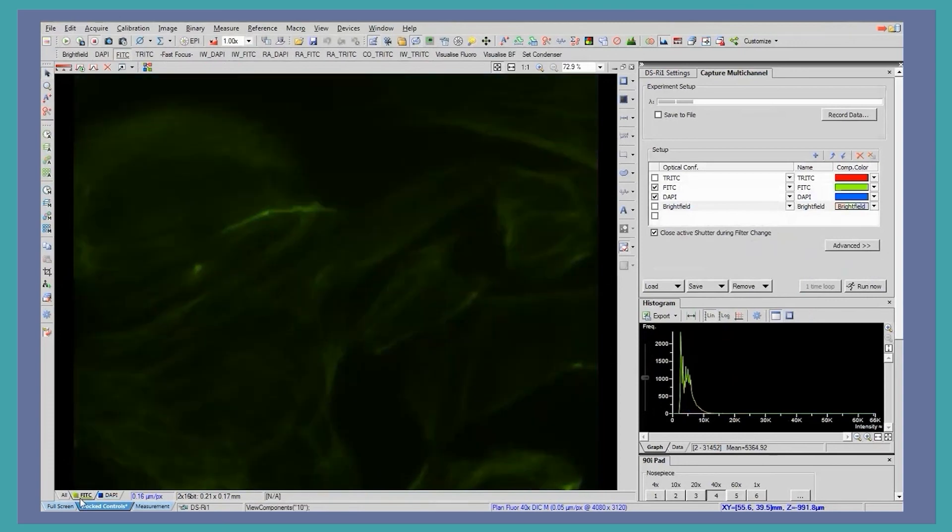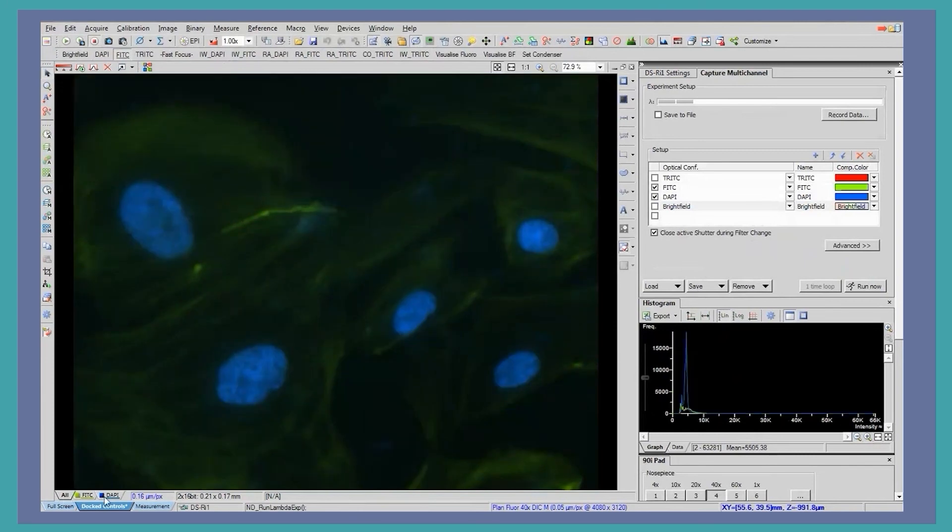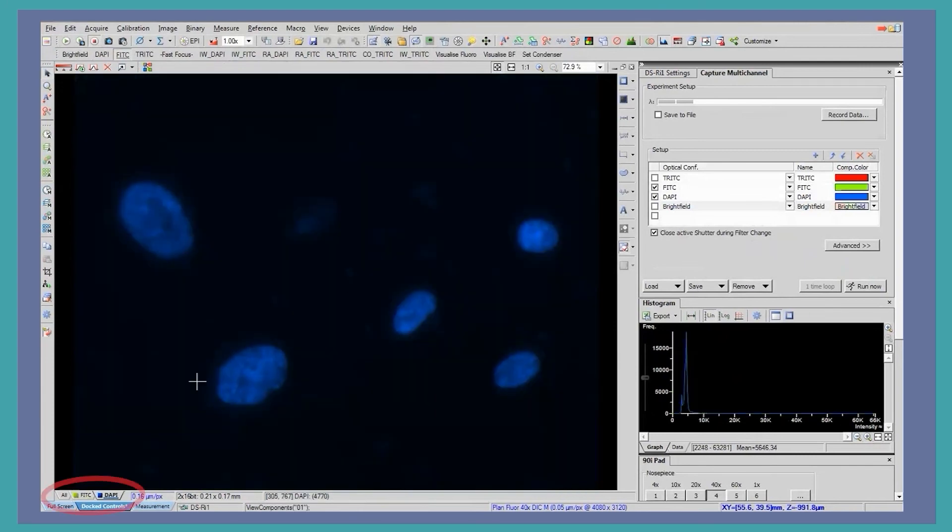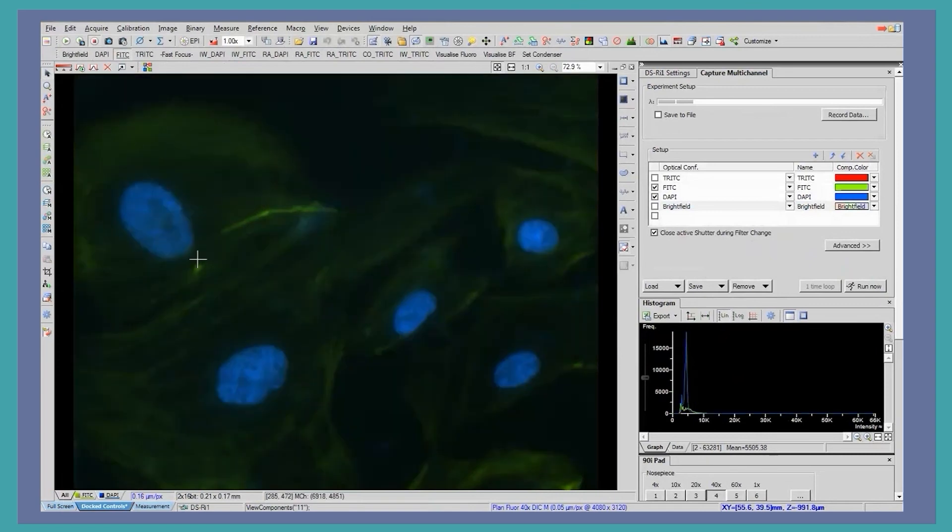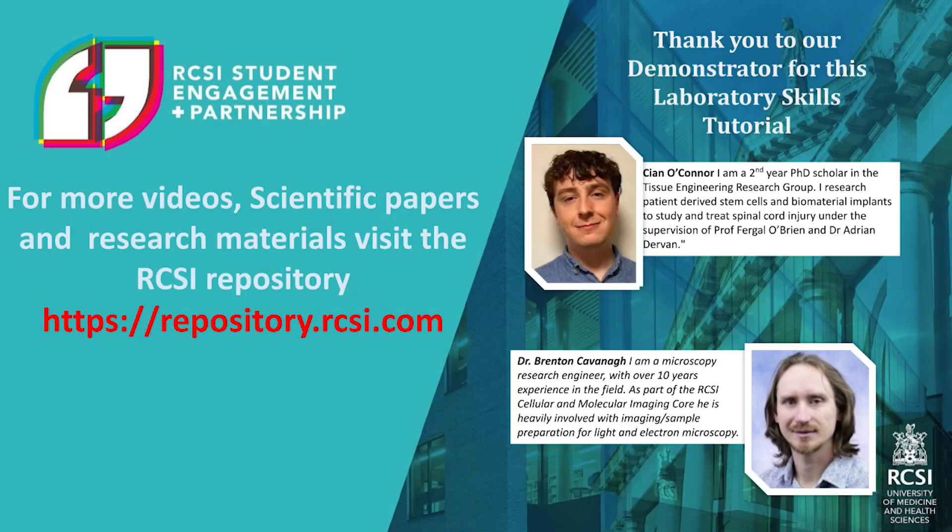This is green FITC staining for the actin cytoskeleton of meningeal cells. Additionally, we can check the individual images and make sure we are happy with the stain and image quality before moving on to another part of the sample. Thank you for watching this video on fluorescent microscopy.